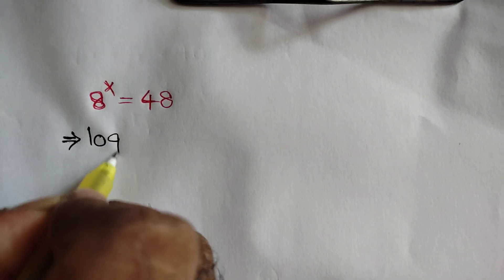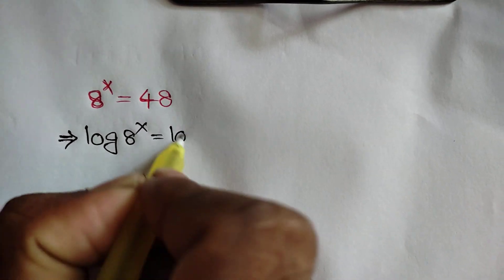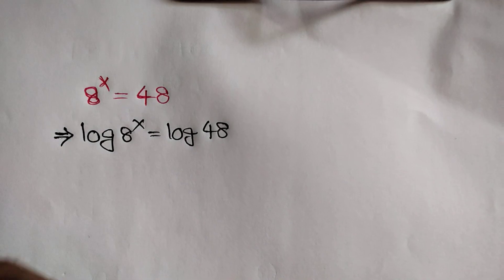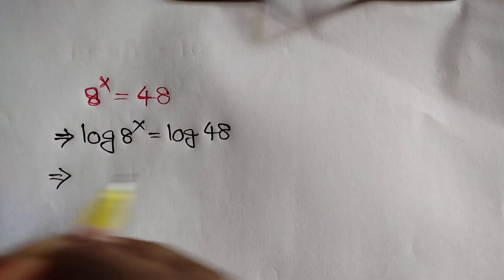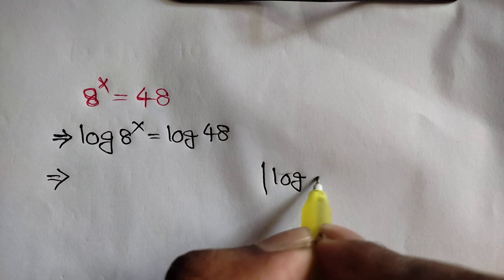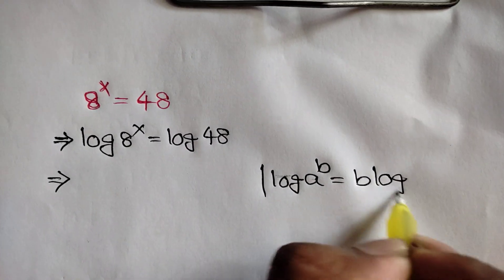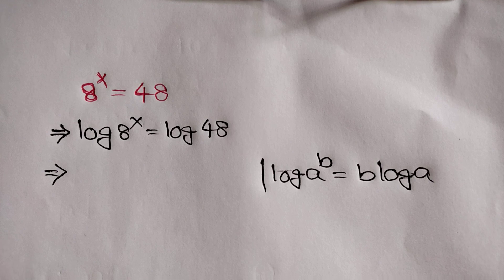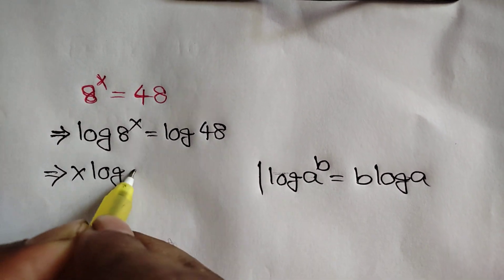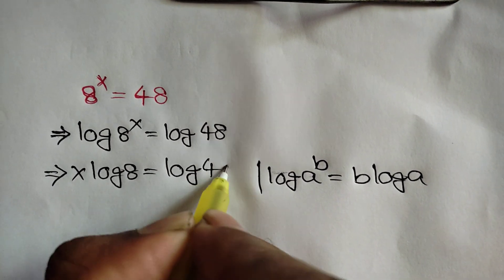Taking log of both sides, we can write log of 8 to the power x is equal to log of 48. We know log of a power b is equal to b log of a. Applying this rule, we can write x log of 8 is equal to log of 48.